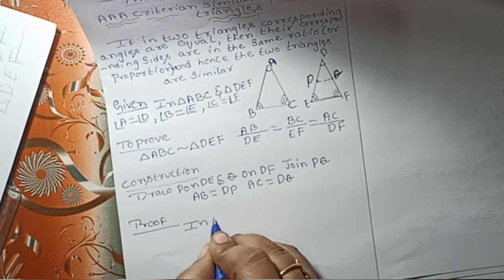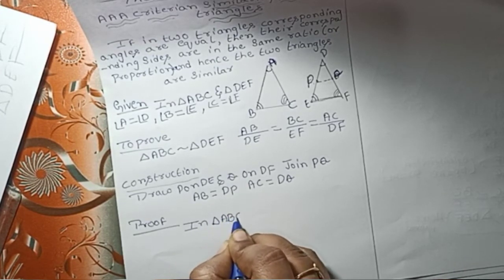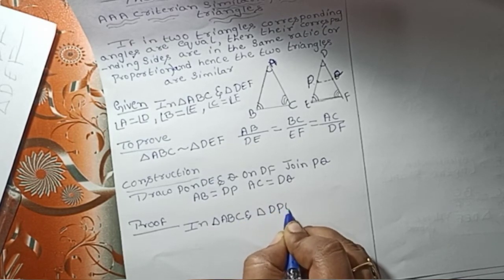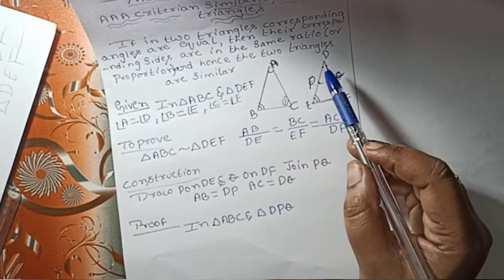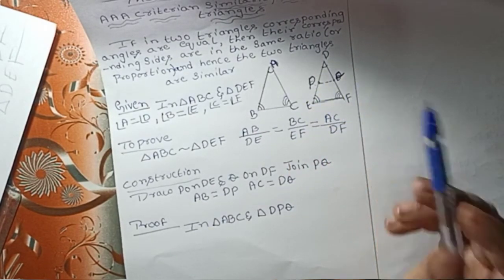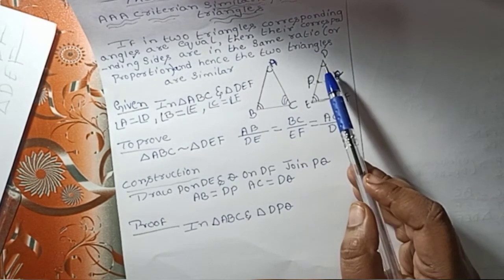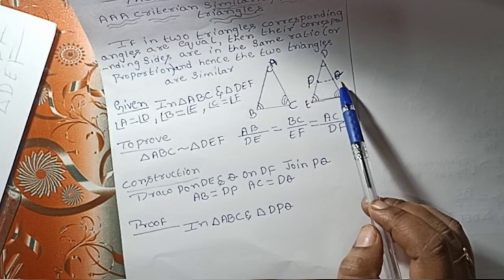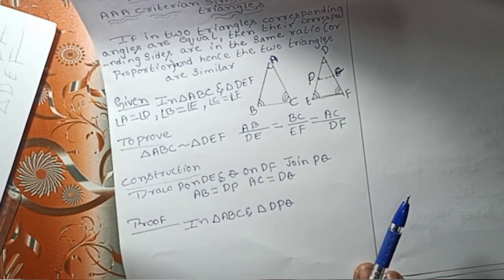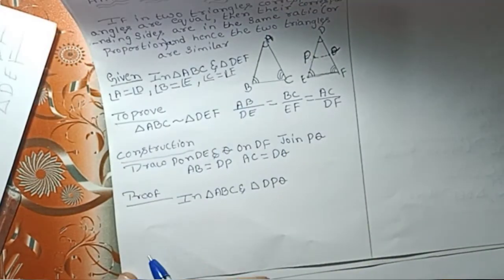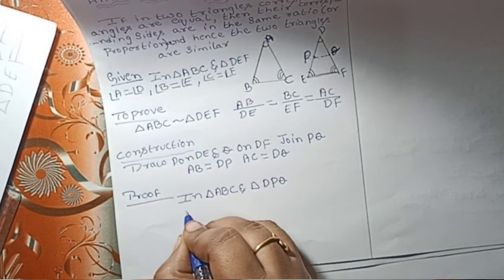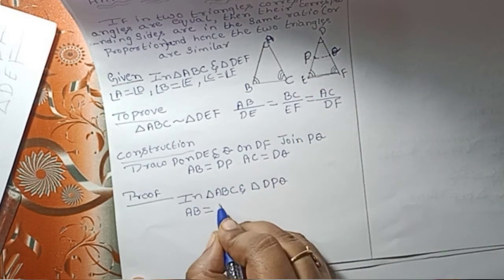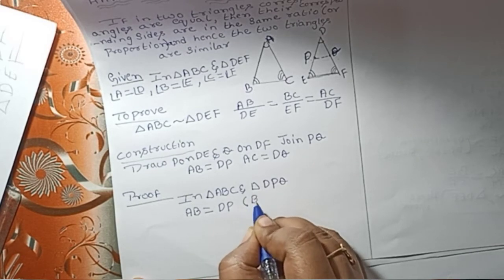In triangles ABC and DPQ: AB is equal to DP and AC is equal to DQ, both by construction.